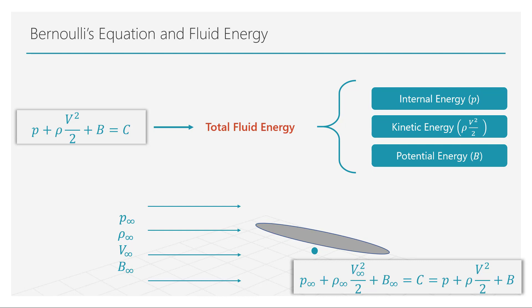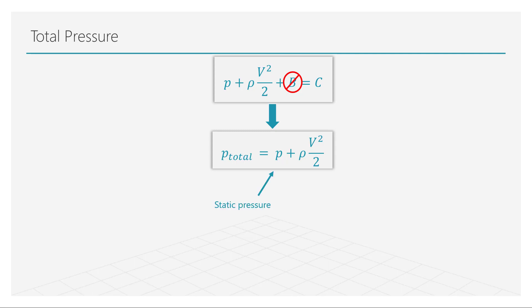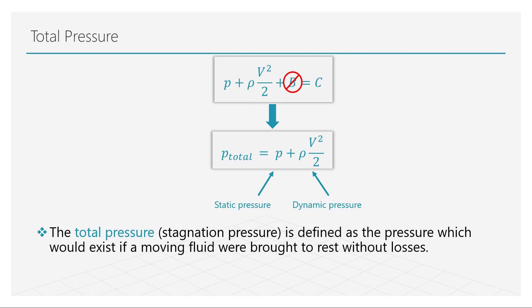Based on Bernoulli's equation, we can define a crucial flow property called the total or stagnation pressure. If we assume that the potential energy of the fluid is negligible, we are left with just two terms. The first term is the pressure in the fluid, also called the static pressure. The second term, in addition to being the kinetic energy of the fluid, has the units of pressure and is referred to as the dynamic pressure. The sum of these two terms is the total pressure — defined as the pressure which would exist if a moving fluid was brought to rest without losses.